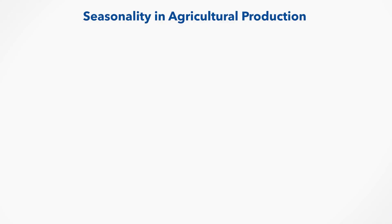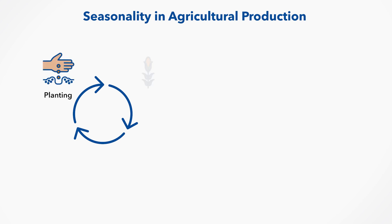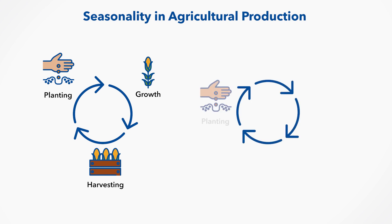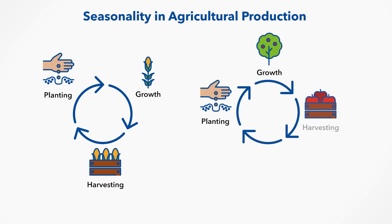Agricultural production generally follows a seasonal pattern with planting, growth and harvesting of crops occurring at regular times each year. Related industries such as fruit canning may follow a similar pattern of seasonality.